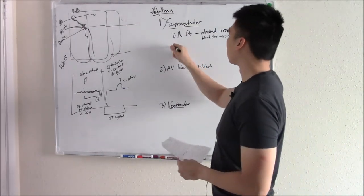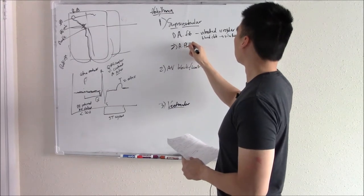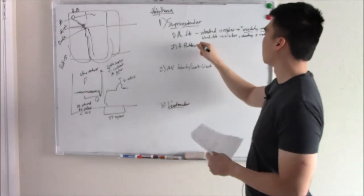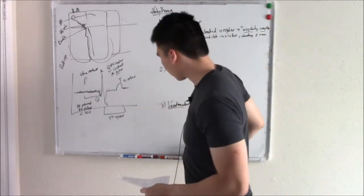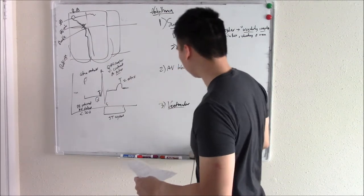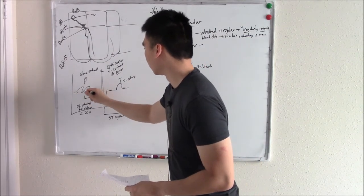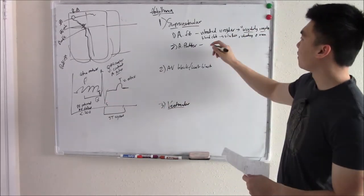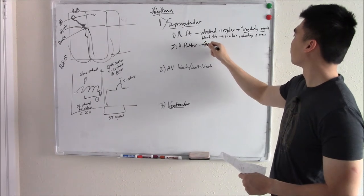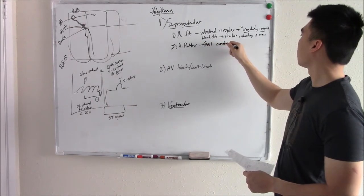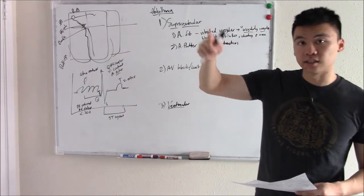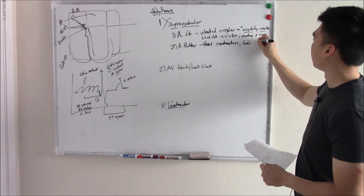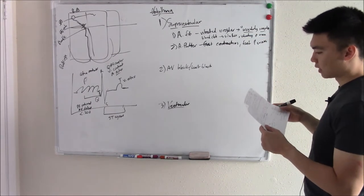The second supraventricular arrhythmia is atrial flutter. Here the atria are actually contracting — which is good — but contracting really, really fast, even faster than the ventricles. You will see clear P waves on the ECG, just very fast ones.